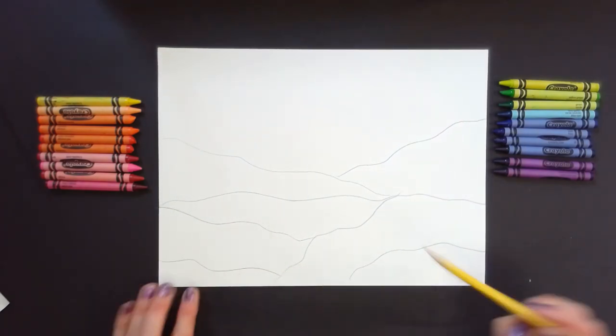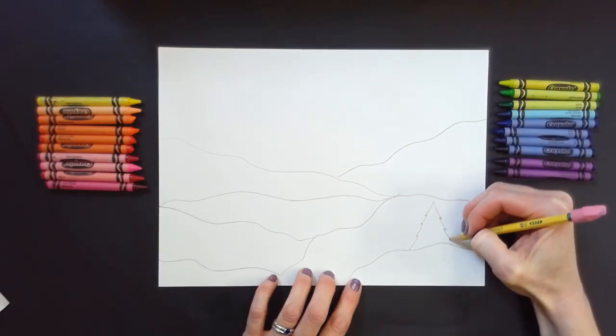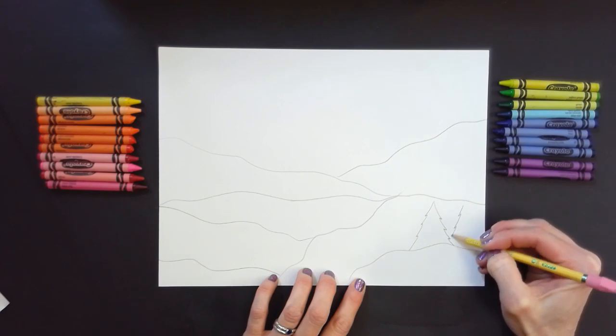You can make it straight to represent flat land, you can make it bumpy to show hills, or you can add some tall mountain lines.